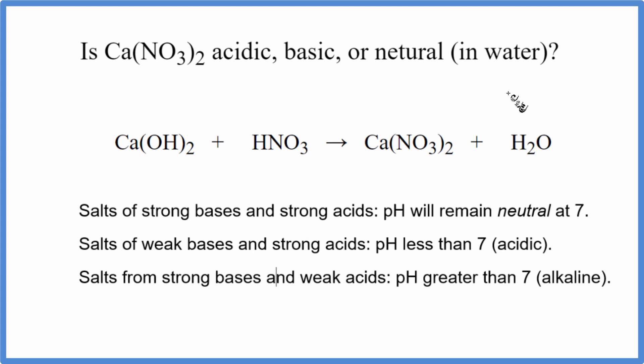First thing we need is the equation that produced this calcium nitrate. So to produce the calcium nitrate in a neutralization reaction, we have a base, calcium hydroxide, plus this acid here, nitric acid. That'll give us calcium nitrate, and this is neutralization, so we'll also have water.